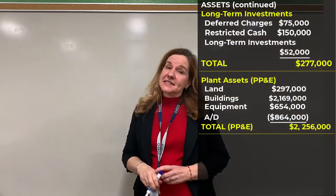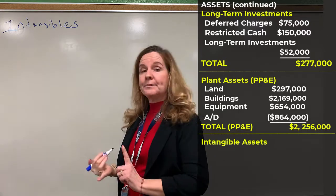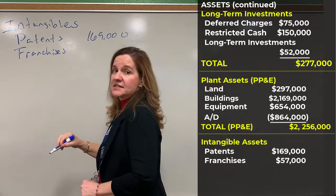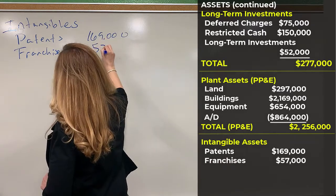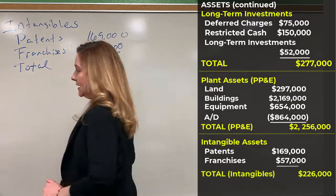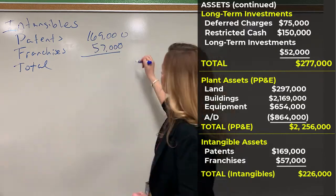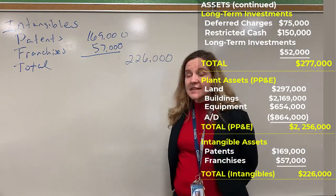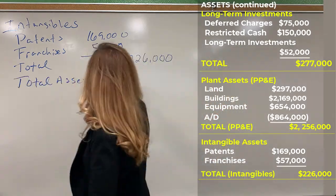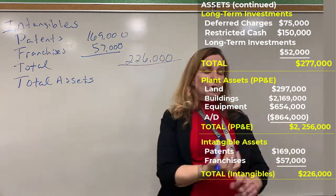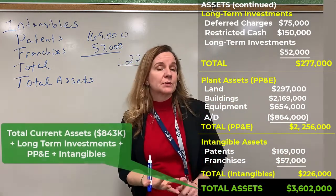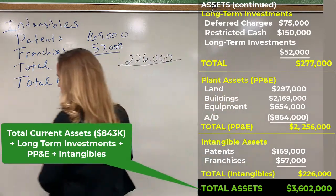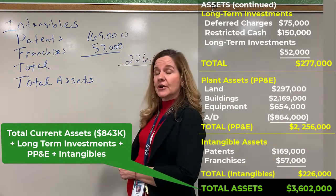The next category is intangible assets. The intangibles are patents at $169,000 and franchises at $57,000, totaling $226,000. We have now finished the assets, so we're going to do total assets — that's totaling up the total current assets, total long-term investments, total property, plant and equipment, and total intangibles — and that comes to $3,602,000.